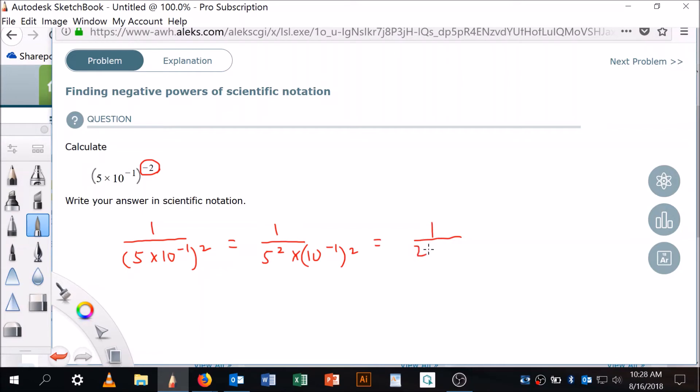Okay, so this is the same thing as one over 25. And then when you have an exponent that's raised to another exponent, they're multiplied. We don't add anymore, that's when you have a common base.